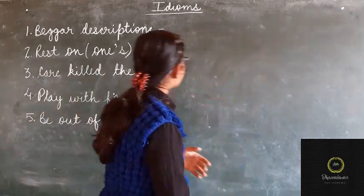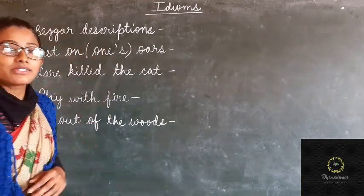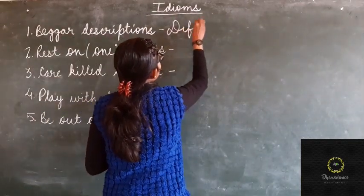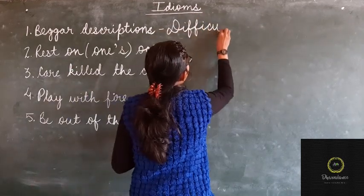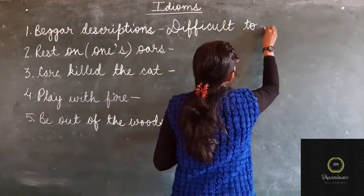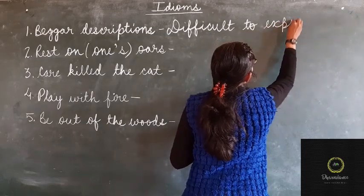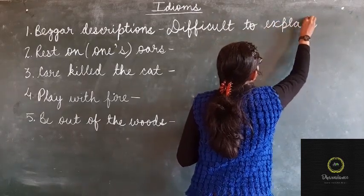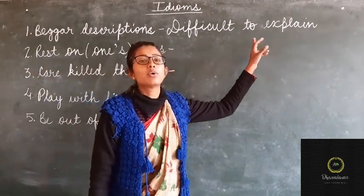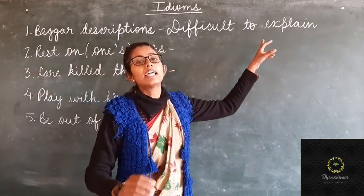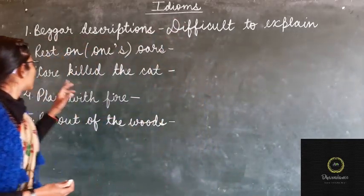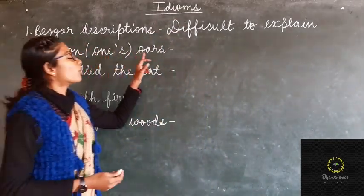So 'beggars description' means something difficult to explain — something complex that cannot be explained easily. The second idiom is 'rest on one's own.'